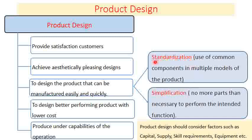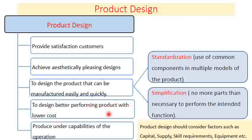We can use standardization and simplification to achieve easy and quick manufacturing in order to deliver to the market ahead of competitors. Standardization means using mass production with the same components that are replaceable and interchangeable. Simplification means removing or reducing unnecessary parts that cannot add value to the final product. The design should also perform better than the previous one and, if possible, with lower cost. Product design should consider our capabilities — resources like capital, supply, skill requirements, and equipment — and not be over-ambitious beyond our scope.